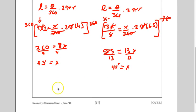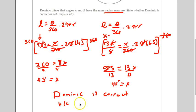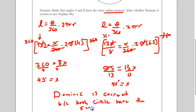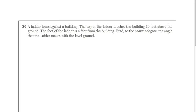We found that both circles have a degree measure of 45 degrees. So Dominic is correct because both circles have the same angle measure. Done and done — though that's a lot of work for two points.